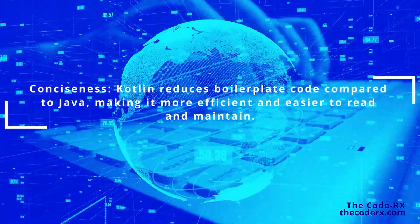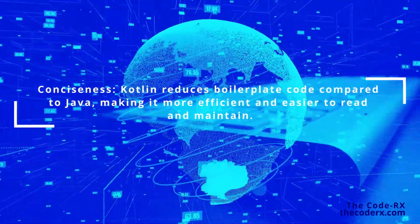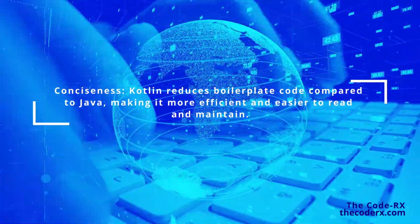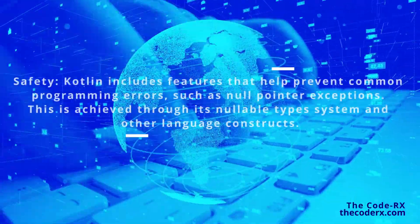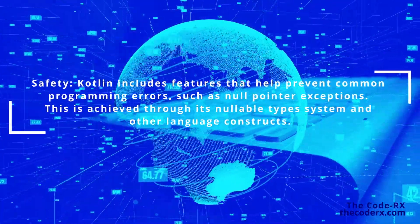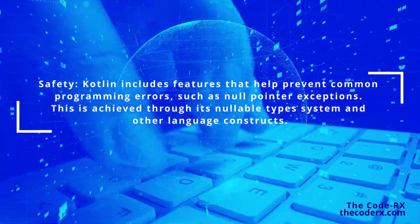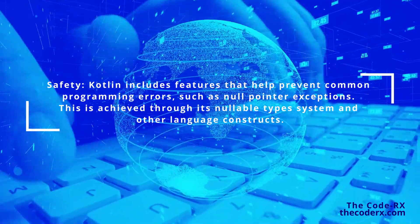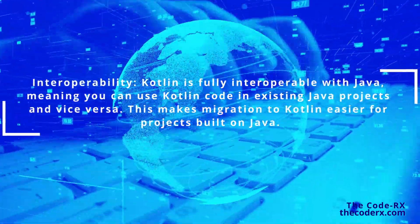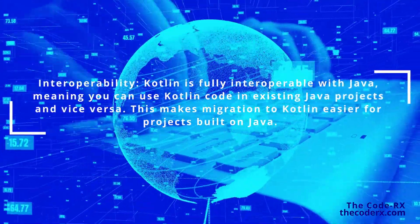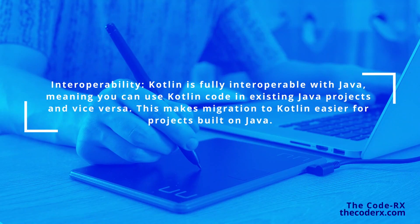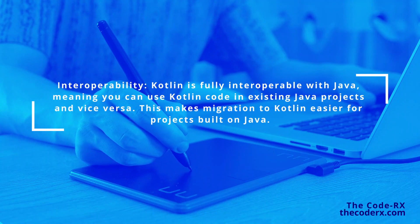Some of the key features of Kotlin: first, conciseness — Kotlin reduces boilerplate code compared to Java, making it more efficient and easier to read and maintain. Another key feature is safety. Kotlin includes features that help prevent common programming errors such as null pointer exceptions, achieved through its nullable type system and other language constructs. Another key feature is interoperability — Kotlin is fully interoperable with Java, meaning you can use Kotlin code in existing Java projects and vice versa, making migration to Kotlin easier for projects built on Java.